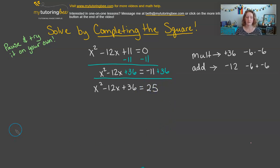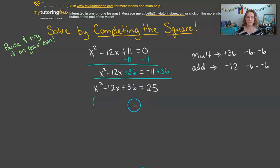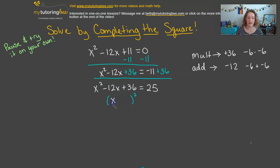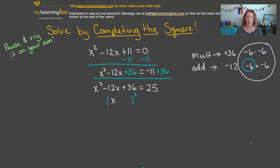Simplifying: x squared minus 12x plus 36 equals negative 11 plus 36, which gives us positive 25. Now we're ready for step two — factoring. We can use a shortcut here: we know it's going to be a squared binomial, x plus or minus something, and we already know that something is negative 6. So this becomes x minus 6 squared equals 25.